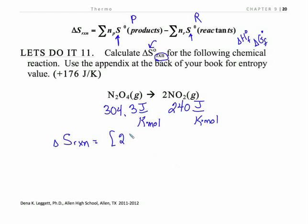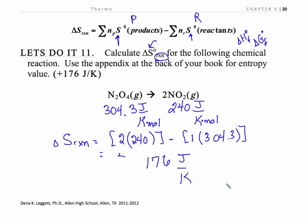I'm going to multiply it by two moles. That will get rid of the moles and it's 240 minus one, I'm just being explicit there, 304.3. And the moles cancel, that mole will cancel with that mole. And what we end up with is 176 joules per kelvin for that reaction as written. That means for one mole of N₂O₄ and for two moles of NO₂.